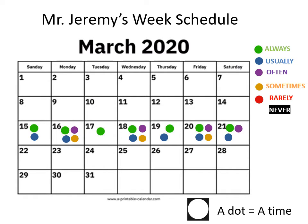Đây là ví dụ về lịch làm việc theo tuần của thầy Jeremy. Các con có thể thấy mỗi ngày đều có chấm tròn màu xanh lá cây — đó là 'always'. 'Usually' có ít chấm hơn, chỉ trừ ngày thứ 3. 'Often' có 4 chấm màu tím — có 4 ngày thầy Jeremy làm và 3 ngày còn lại không làm — nghĩa là số ngày làm vẫn nhiều hơn số ngày không làm.